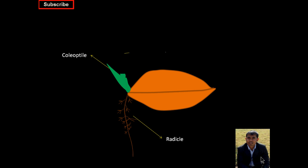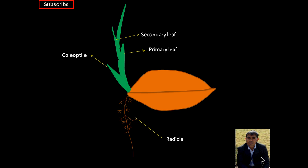After that, there will be the formation of the primary leaves, secondary leaves, and then tertiary leaves. The elongated zone in between the first node and the root is the mesocotyl.